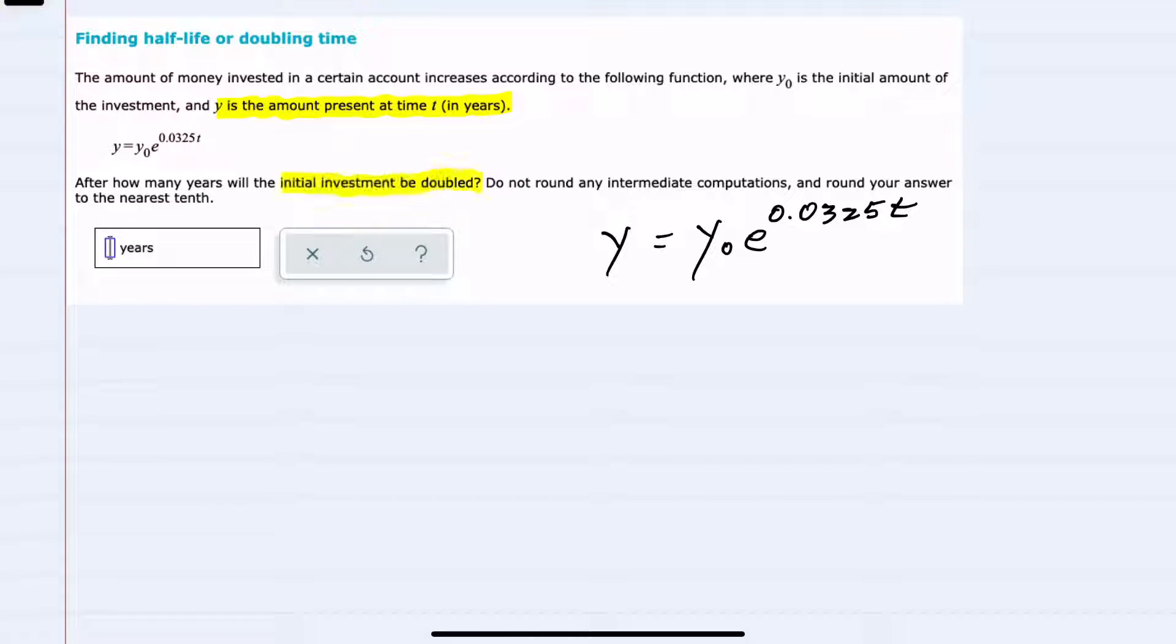We're asked after how many years will the initial investment double. The critical piece of information we need to know here is that when the initial investment doubles, that means our final value y will be equal to twice the initial value, 2y₀.